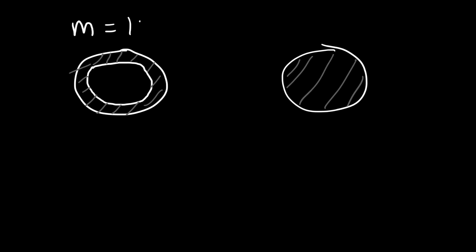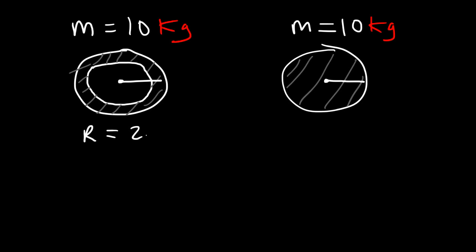So that's the basic concept of inertia as it relates to translational motion. Now, what about rotational motion — how does inertia play a role in that? Let's compare two objects: the first one is a thin hoop and the second one is a solid disk. For the thin hoop, the mass is concentrated at the edge of the circle. For the solid disk, the mass is distributed throughout the circle. Now let's say both the thin hoop and the solid disk have a mass of 10 kilograms and a radius of 2 meters.